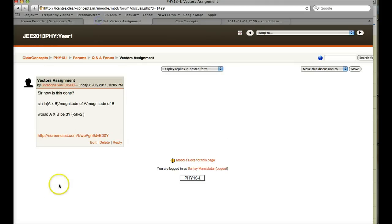Let's look at what you're trying to do. What you're saying is the angle is sine inverse of a cross b divided by magnitude of b. Actually that's wrong. Let's see why.